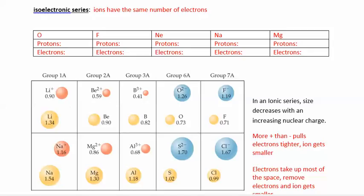Today we're going to talk about the isoelectronic series, and that's when you have a whole bunch of ions that have the same number of electrons. First let's look at this particular isoelectronic series dealing with neon, sodium, magnesium, fluorine, and oxygen.